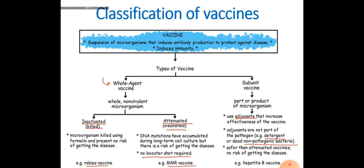Whole agent vaccines are whole non-virulent microorganisms. Non-virulent means yeh infection cause nahi karti, body pe kuch bhi harm nahi cause karti hain. Ab yeh inactivated ho sakti hain and attenuated ho sakti hain. Inactivated mein microorganism killed hota hai using formalin and presents no risk of getting the disease — microorganism ko puri tarike se killed kar diya jata hai.